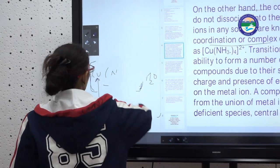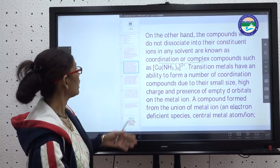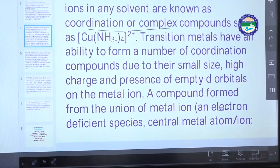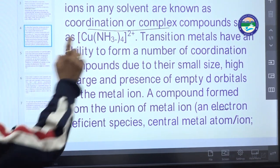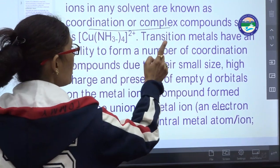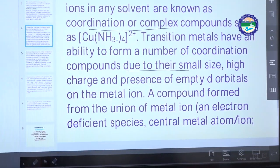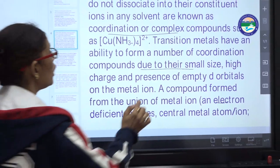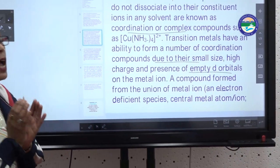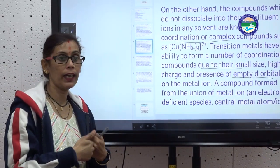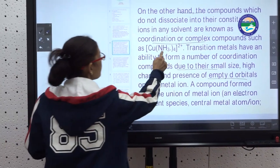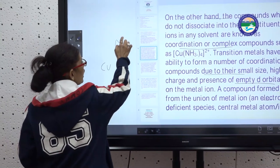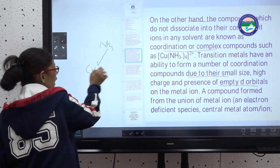The transition metals have the ability to form a number of coordinate compounds due to their small size, higher charge, and the presence of empty d-orbitals. The most important reason is the presence of empty d-orbitals — the more empty d-orbitals, the more electrons can be accepted. The surrounding species, like [NH₃]₄, always donate electrons to the central metal.